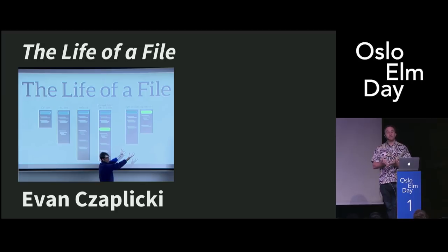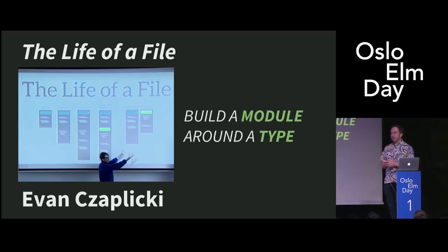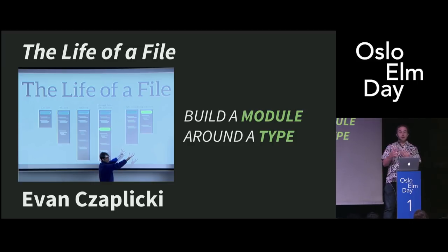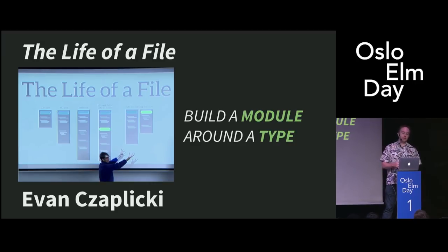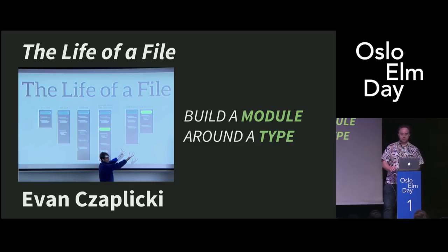The big takeaway here is that the way the modules are structured is based on Evan's talk 'The Life of a File,' which he gave at Elm Europe. To dramatically oversimplify it: he advised try building a module around a particular type. Find a type and then build a module around it. Think of an interface that module should have — what to expose or not expose to the world, and how those things interact with the rest of your modules. So thinking more in terms of modules and modularity and interfaces than about files per se.